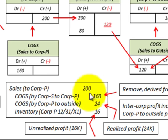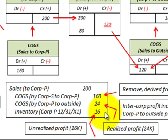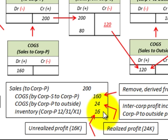In summary, we removed the intercompany sales and the associated cost of goods sold, along with the intercompany profit on those sales of $24,000. What remains is $16,000 worth of unrealized profit, which is credited to the inventory account, because no profit can be recognized until it is realized through a sale to an outside party. Since $80,000 of inventory remains unsold, it includes an unrealized profit of $16,000.